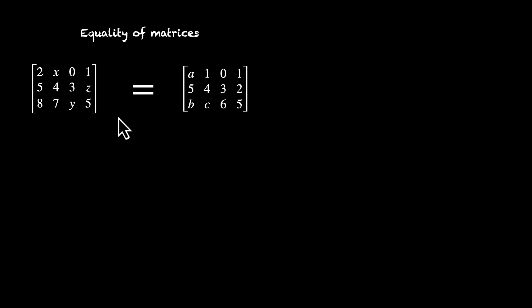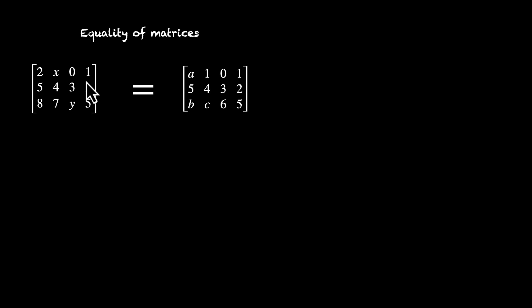In this video, we are going to talk about equality of matrices. Two matrices are equal if their corresponding elements are equal. So if we know that these two matrices are equal, we can say that their corresponding elements will be equal. This one, which is the last element of the first row, will be the same as this one, that is the last element of this first row.